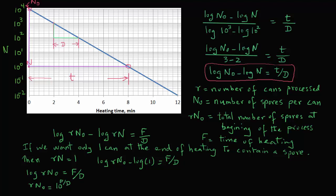Or we can rearrange the terms, and we can say 1 over r equals n0 over 10 raised to power f over d. This is the equation that we want to use for spoilage probability.